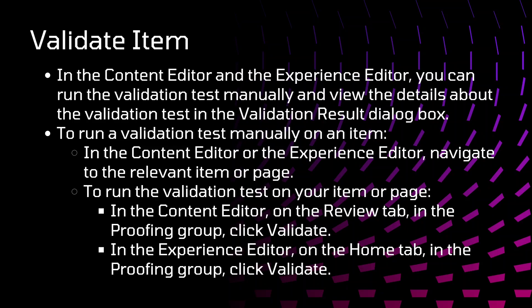To run a validation test manually on an item: first, in the content editor or the experience editor, navigate to the relevant item or page. Second, to run the validation test on your item or page, in the content editor on the Review tab, in the Proofing group, click Validate.